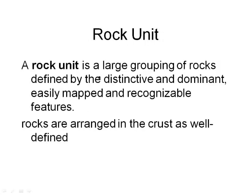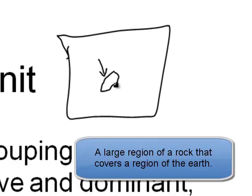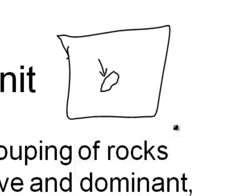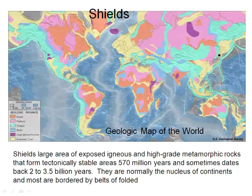Here are four different words we're going to cover. First, what's a rock unit? A rock unit is a large grouping of rocks defined by distinctive and dominant, easily mapped, and recognizable features. Basically, it's a big section of rock that is all one type. We'll be seeing them on maps. So if we have a map of Colorado, a rock unit might take up a huge space, all made up of the same type of rock — a particular variety of igneous, metamorphic, or sedimentary rock.